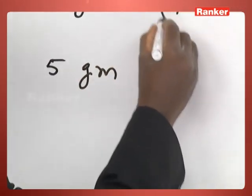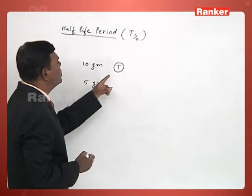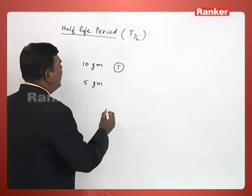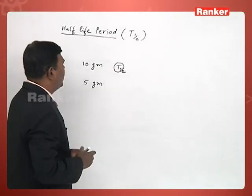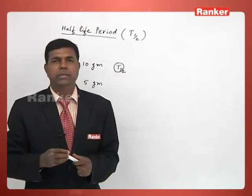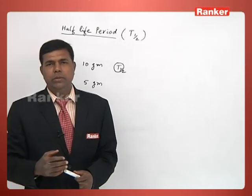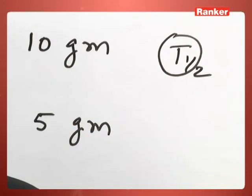This time required for the amount to disintegrate to half of its original amount is known as half life period and it is represented by T half. So, that is what we mean by half life period of a radioactive material. The time required for a radioactive material to disintegrate to half of its initial amount is known as half life period.